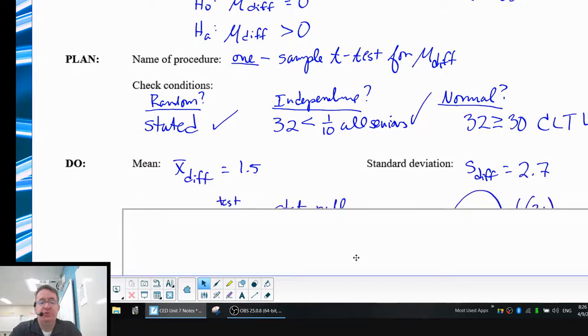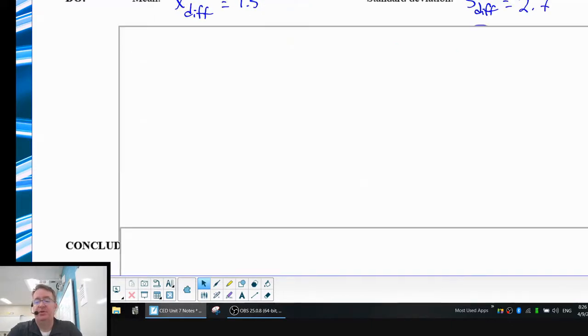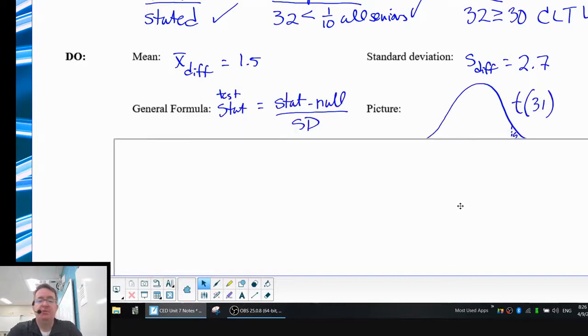Now for the do, the mean and standard deviation, this is one of those things you should probably just note so you don't have to go searching for it later. Your general formula, your test statistic, stat minus null, or stat minus your parameter, all divided by standard deviation.